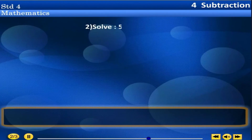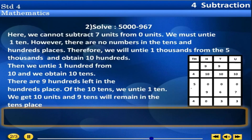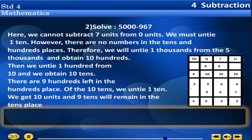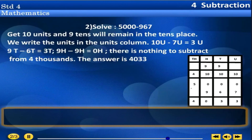Problem 2: Solve 5000 minus 967. We cannot subtract 7 units from 0 units — we must untie 1 ten. However, there are no numbers in the tens and hundreds places. Therefore, we untie 100 from 10 and obtain 10 tens. There are 9 hundreds left in the hundreds place. Of the 10 tens, we untie 1 ten — we get 10 units and 9 tens will remain in the tens place.